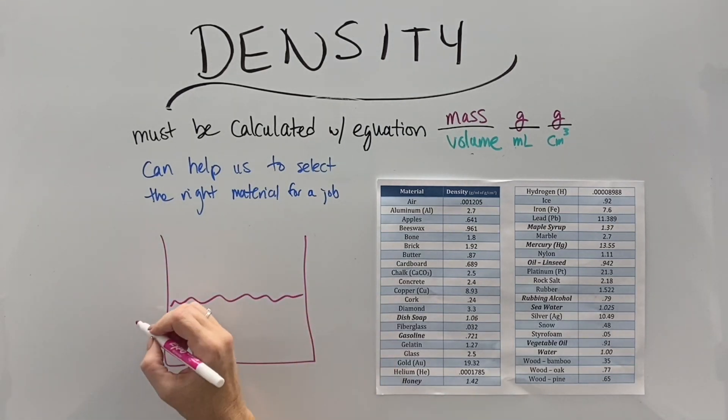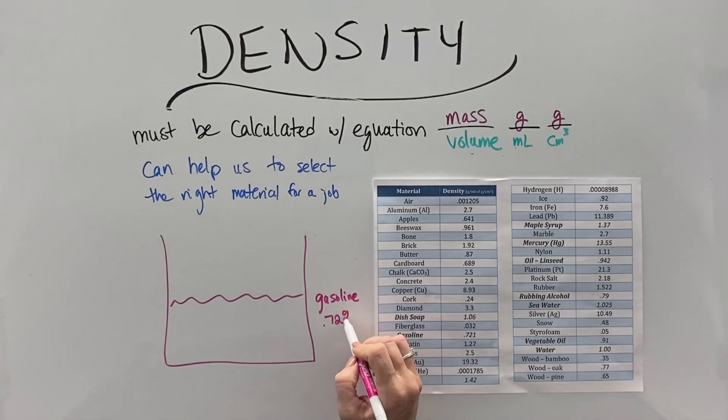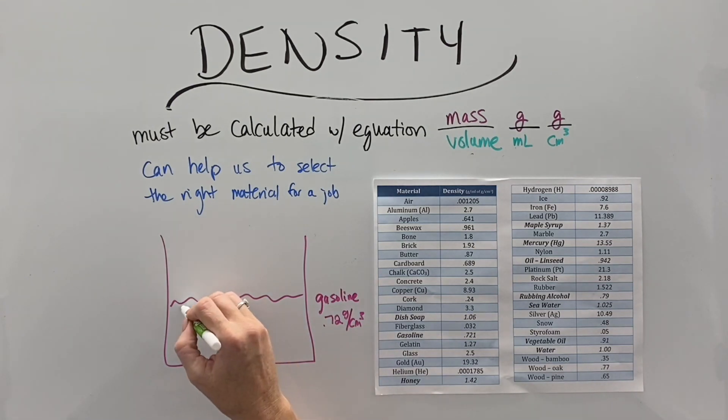Density is a property that can help us select the right material for a job. Let's say you have a tank of gasoline, which has a density of 0.72 grams per cubic centimeter. It's 72% as dense as water, much less dense than water.